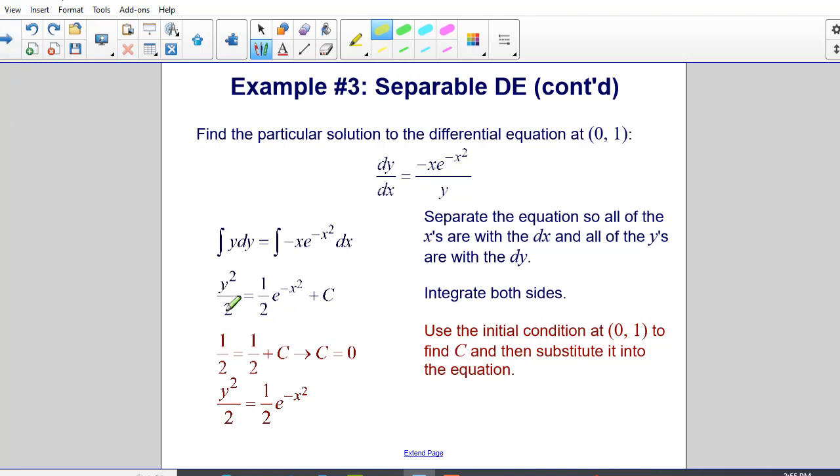So when y is one, so I put y is one right here. And then x is zero. But e to the zero power is one and one times one half is one half. So I have one half is equal to one half plus c, therefore c is equal to zero.